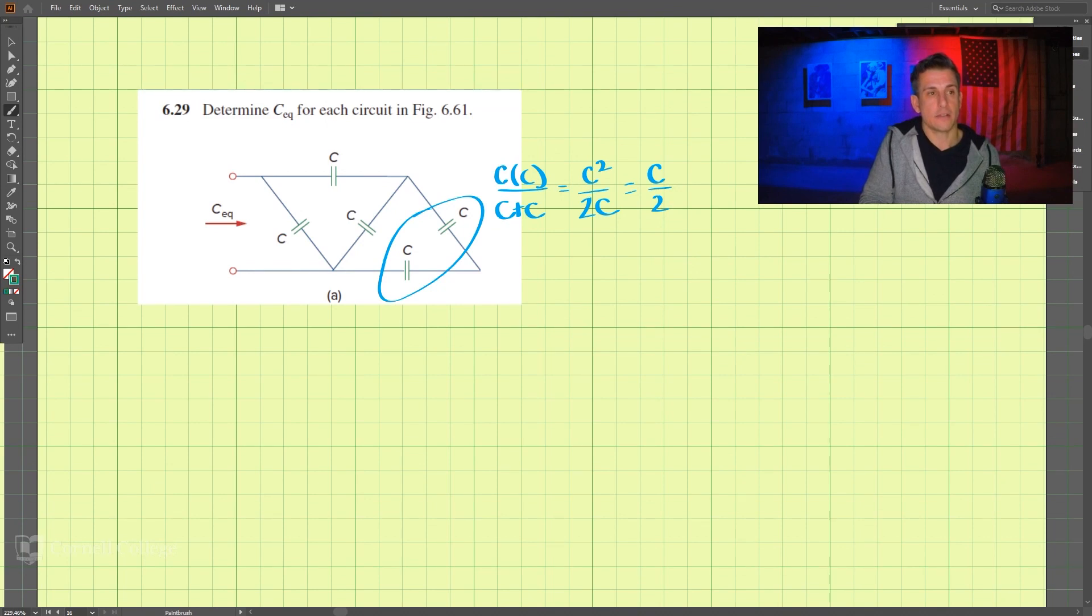Next, let's combine this result with this capacitor here. Those are in parallel with each other. So we just have C plus C divided by 2, which is going to equal 3C divided by 2.